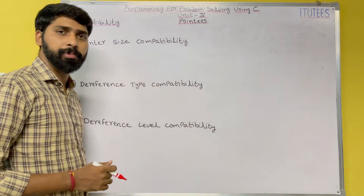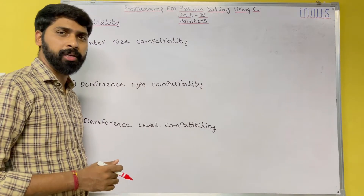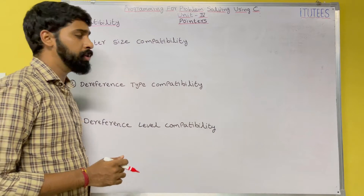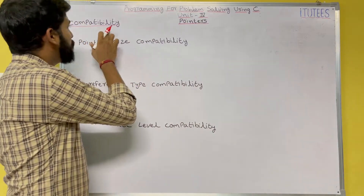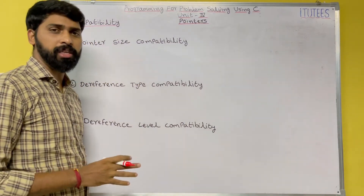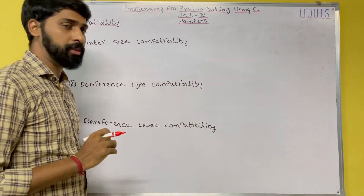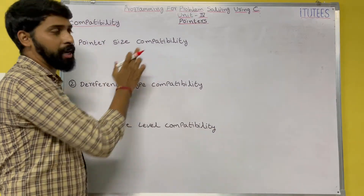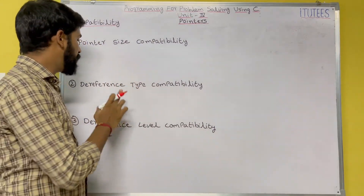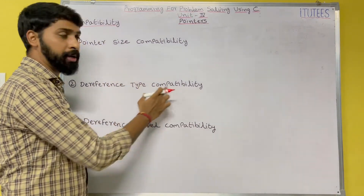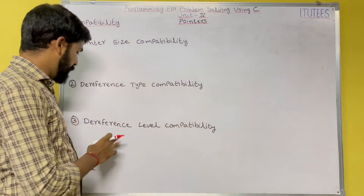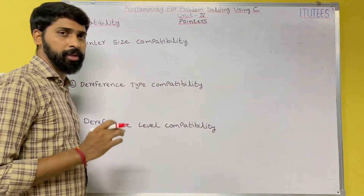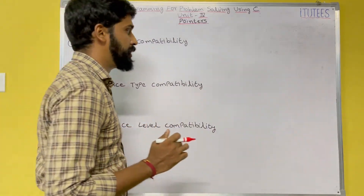Hello friends, welcome to C programming tutorials. In this class we are going to learn about compatibility in pointers. We have three types: one is pointer size compatibility, dereference type compatibility, and dereference level compatibility.